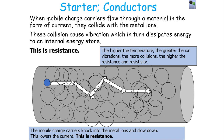Fundamentally, what is resistance? When mobile charge carriers flow through a material in the form of current, they collide with the metal ions making up that conductor. These collisions cause vibrations, which dissipate the energy of the mobile charge carriers to an internal energy store — most commonly thermal energy. If you have a higher temperature, the ions of the conductor will vibrate with a greater amplitude, leading to more collisions with the mobile charge carriers, which lowers the current.